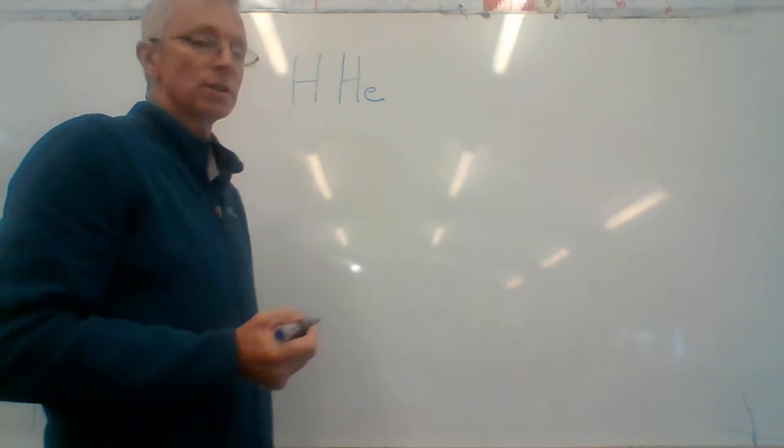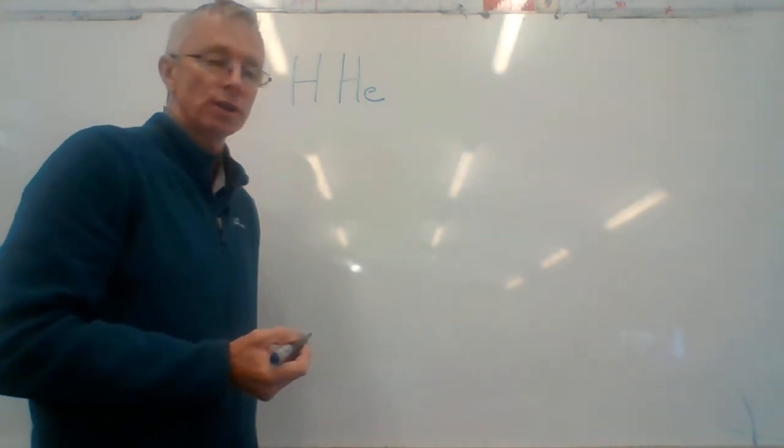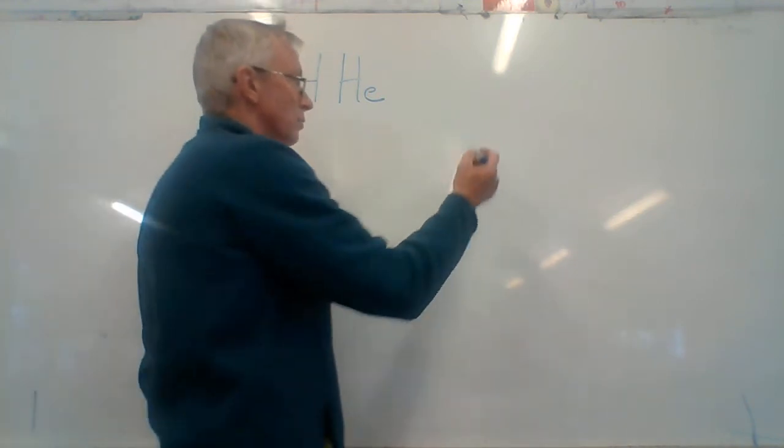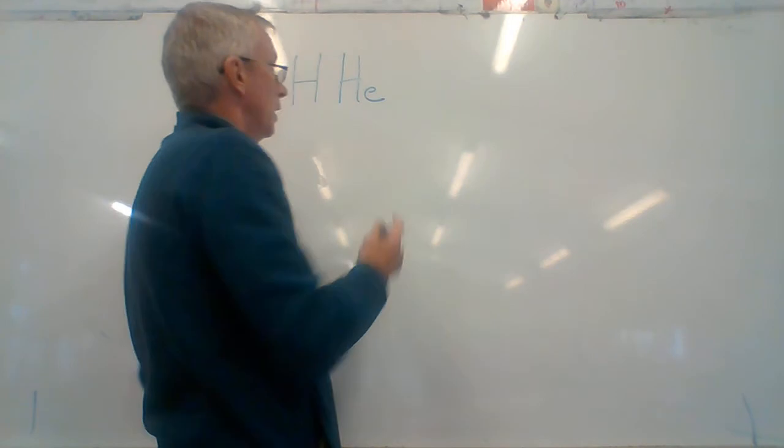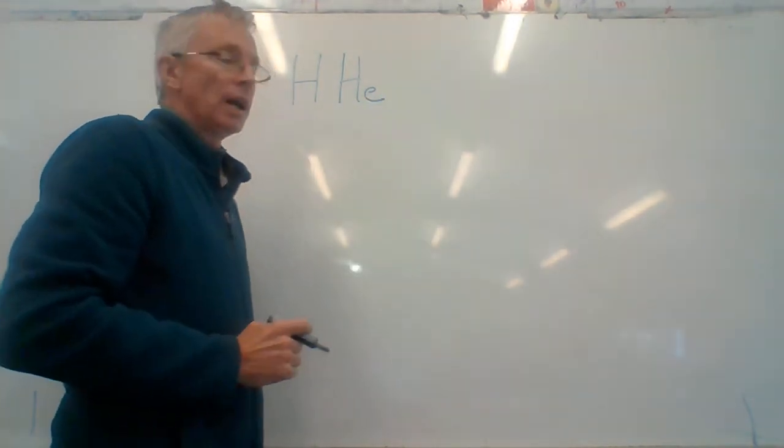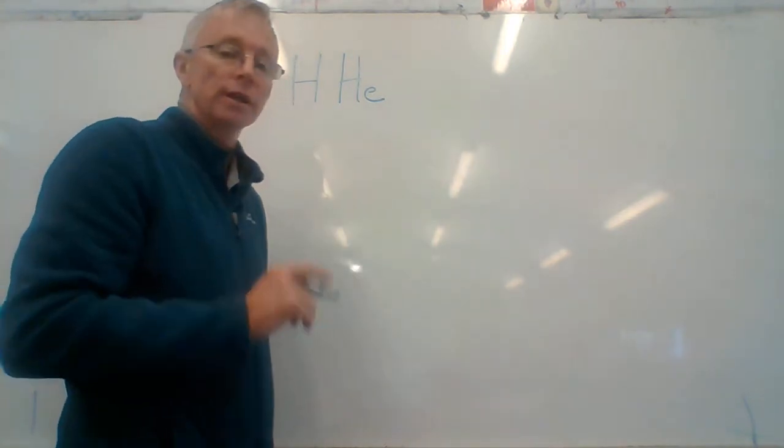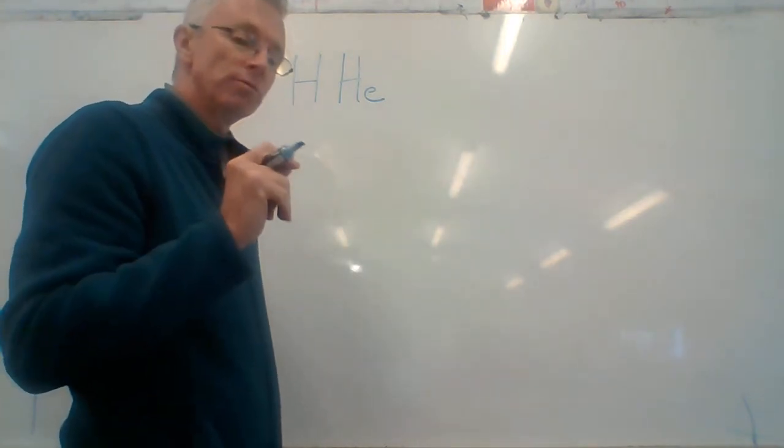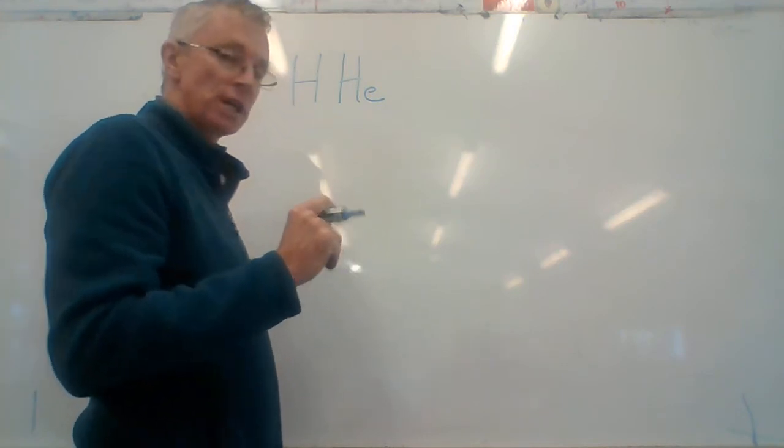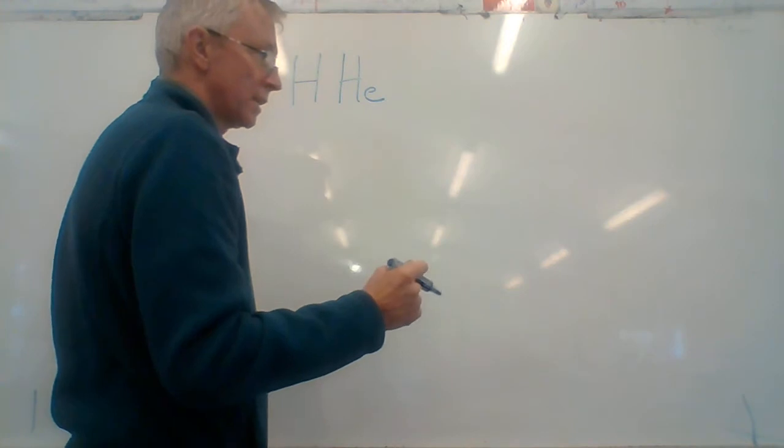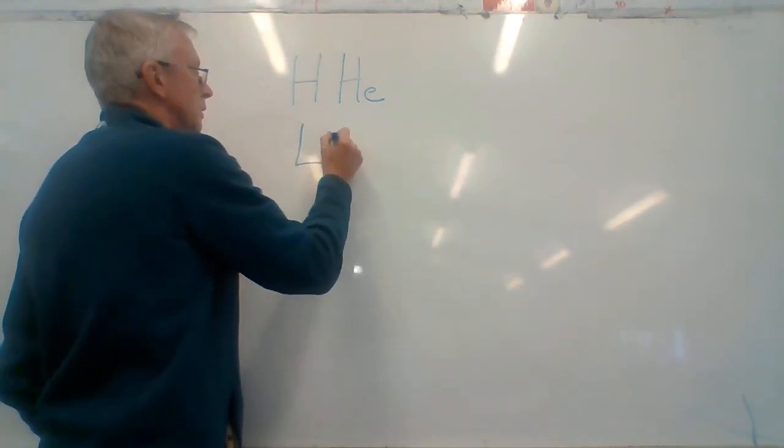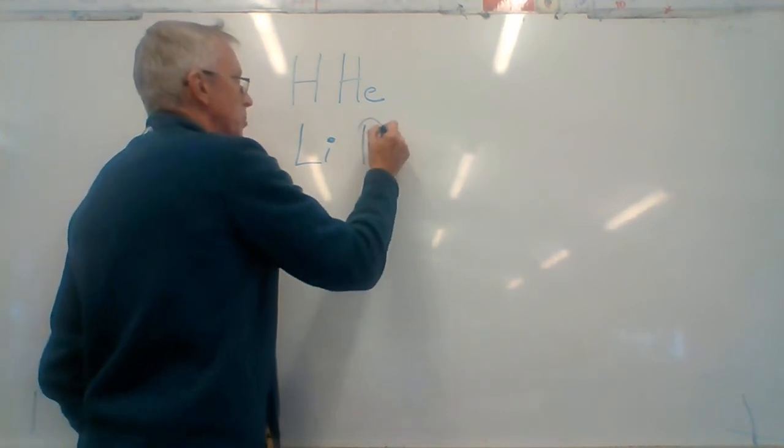So you practice writing that so that at any stage you can think of that word. If you wake up in the middle of the night, you can say HHe and write it perfectly with a capital H and then another capital He. There are four of these words that you need to learn. The key is that you need to pronounce them very carefully and slowly and pronounce every letter in the word. The second line is LiBeBCNOFNe.